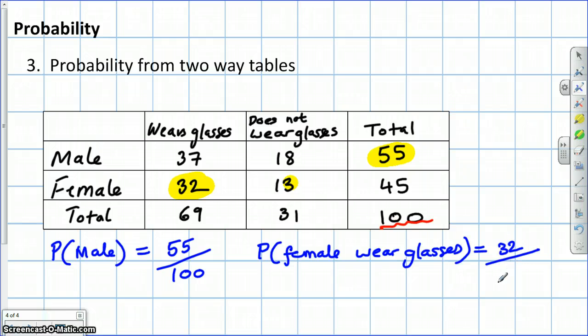But what goes underneath? What's the denominator? Well, we're told that they are female. They've already decided that they're female. So, it's out of the 45 females. So the denominator is 45.